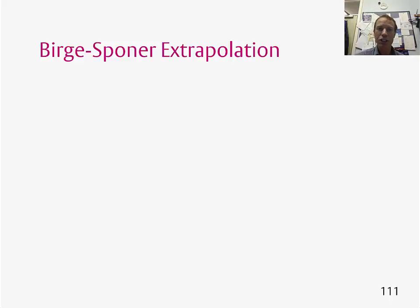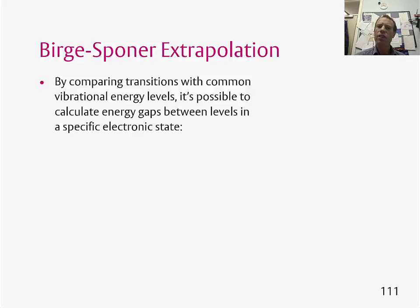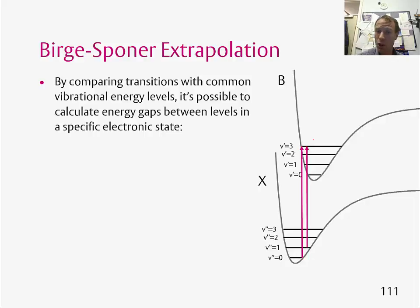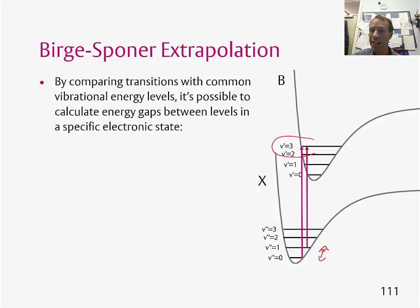Once you've worked that out, you can use what's called a Birge-Sponer extrapolation to calculate useful things. By comparing transitions which have common vibrational energy levels, it's possible to calculate energy gaps between levels. For example, if we can identify the peak for the transition V double-primed equals 0 to V prime equals 3, and another peak for V double-primed equals 1 to V prime equals 3, these two peaks share the common state V prime equals 3. We can measure the wavenumber of these transitions from the spectrum, and subtracting one from the other gives us the energy gap between V equals 0 and V equals 1 in the ground electronic state.